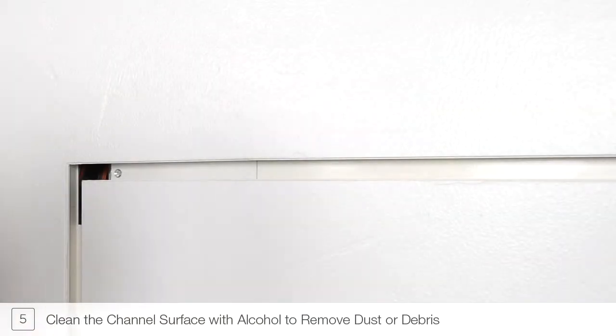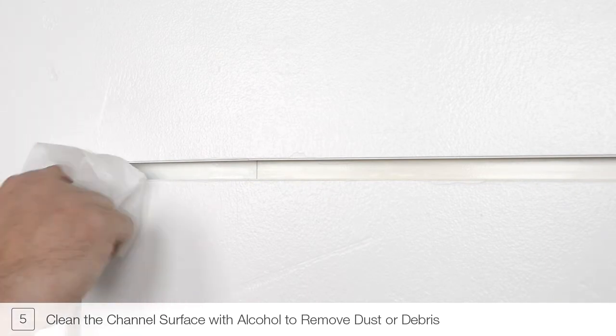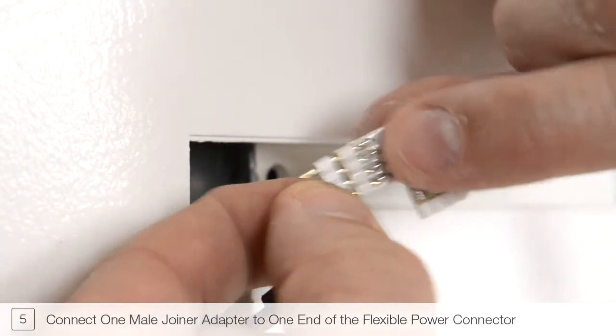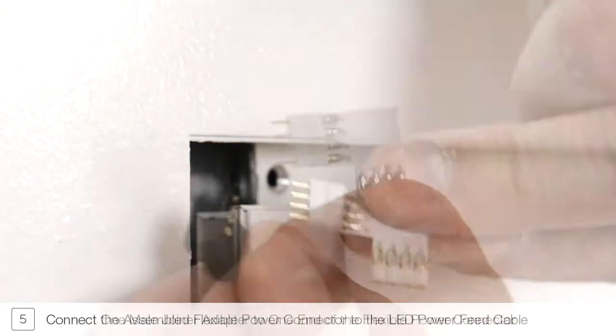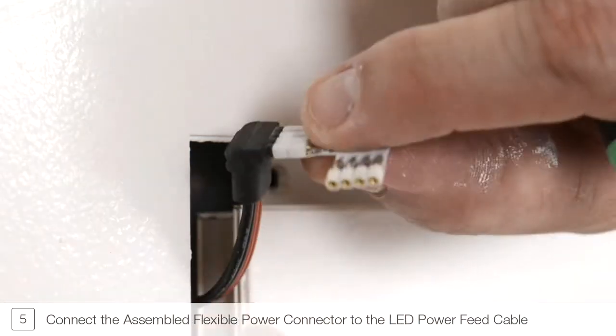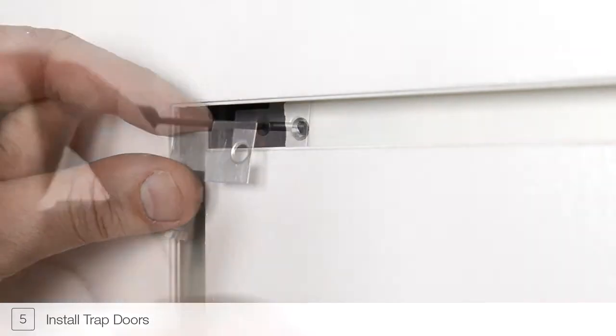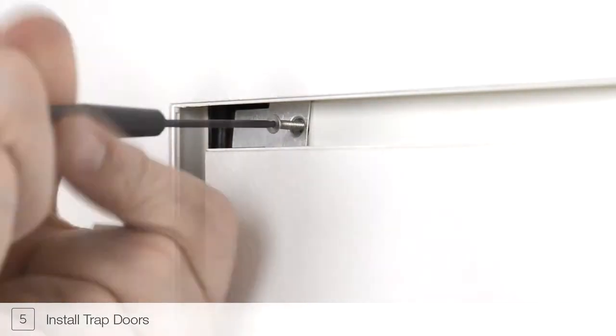Use supplied alcohol pads to remove any residue from inner channel area. Connect one male joiner adapter to one end of the flexible power connector. Connect the assembled flexible power connector to the LED power feed cable. Install and secure the junction box trap doors to the channel.